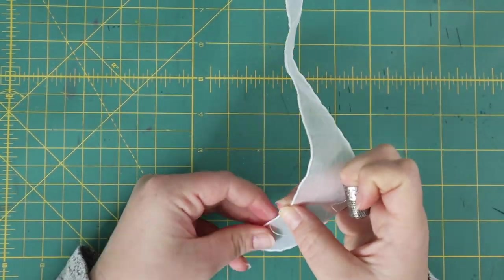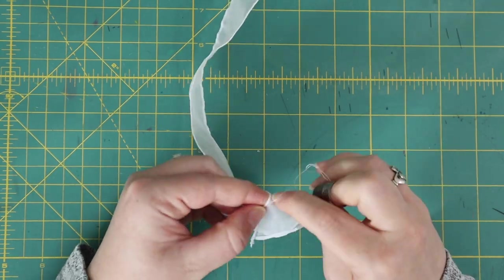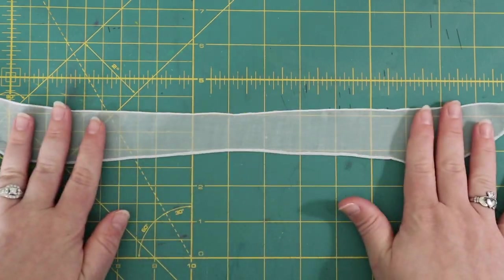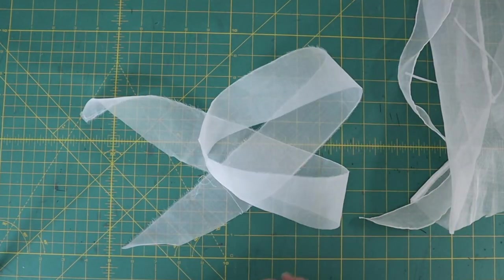With the band finished, I just need to hem the front edge of the ruffle. The edge that connects the ruffle to the cap will be finished and gathered in the same step, but later. Because you just watched me hem the band, we're skipping this bit.